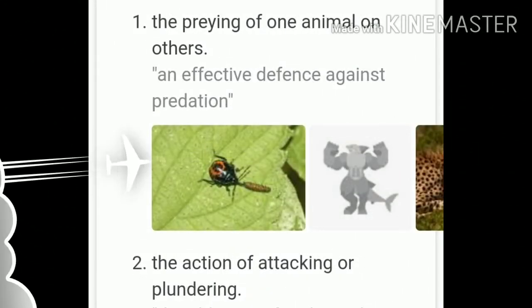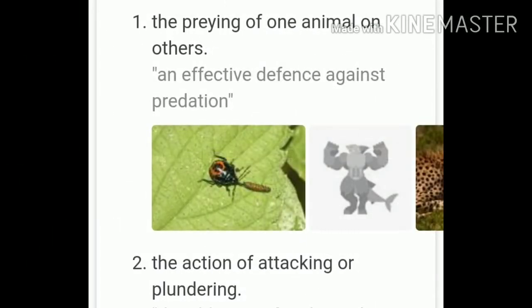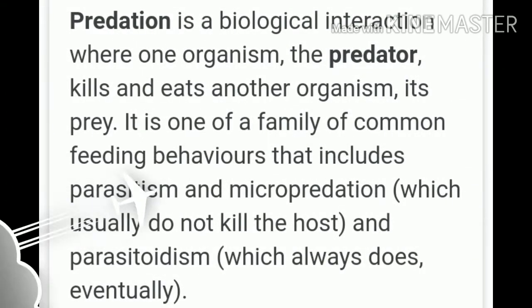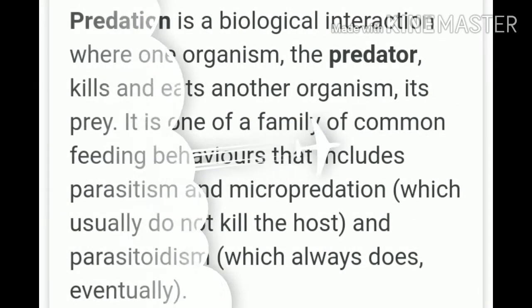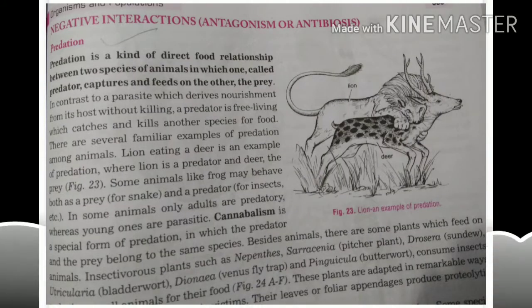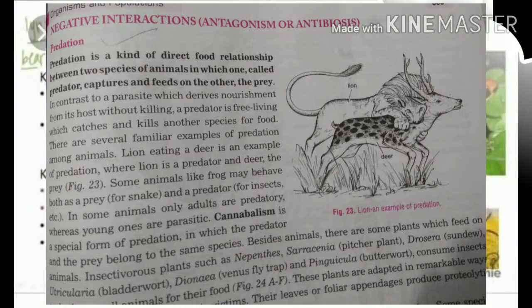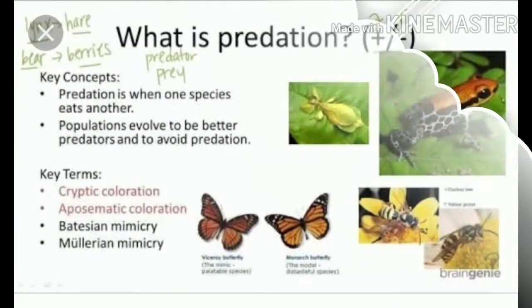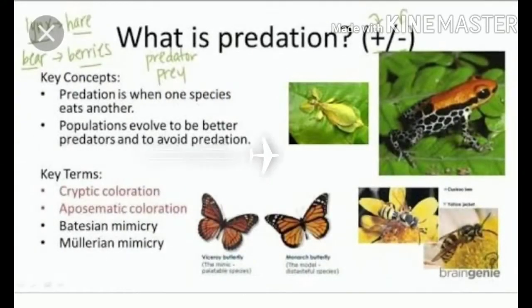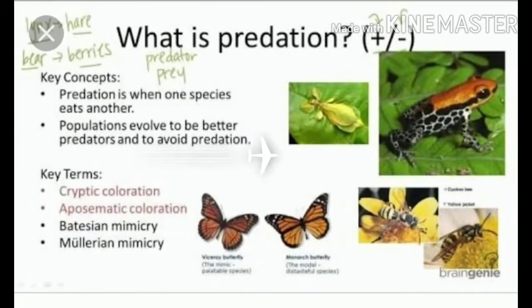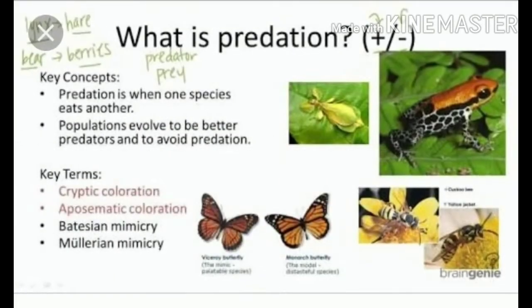Predation is a kind of direct food relationship between two species of animal in which one, called the predator, captures and feeds on the other, the prey. In contrast to a parasite which derives nourishment from its host without killing, a predator is free-living which catches and kills other species for food.